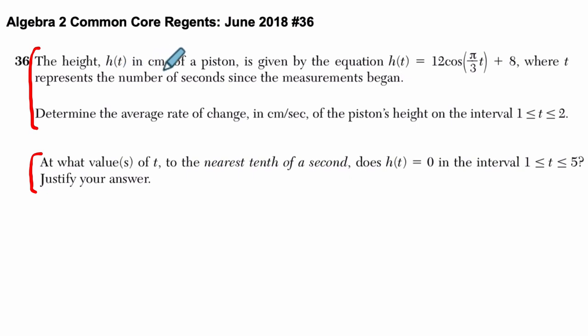It says the height h(t) in centimeters of a piston is given by this equation: h(t) = 12cos(πt/3) + 8, where t represents the number of seconds since the measurement began. Determine the average rate of change in centimeters per second of the piston's height over the interval 1 to 2. You could plug in 1, plug in 2, get the outputs, and find the slope between them.